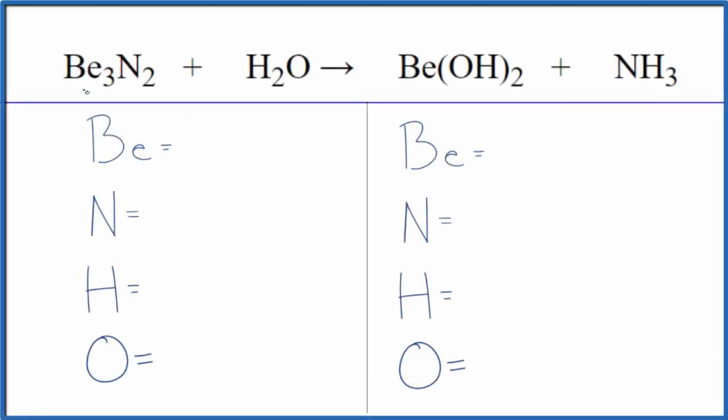In this video we'll balance the equation for Be3N2 plus H2O. So let's just count the atoms up and balance the equation. Three beryllium atoms, two nitrogens, two hydrogens, one oxygen.